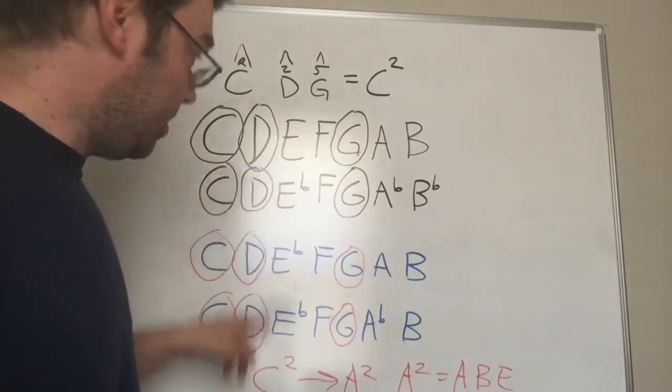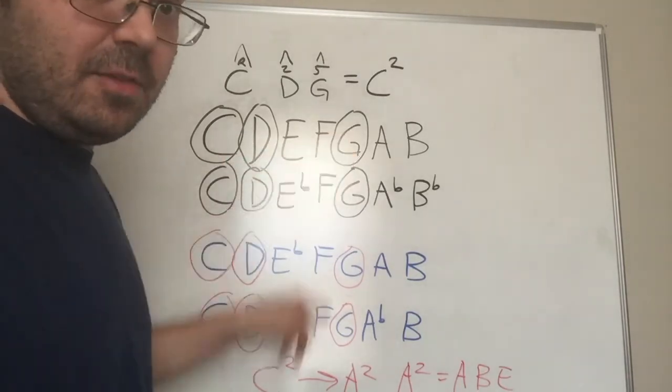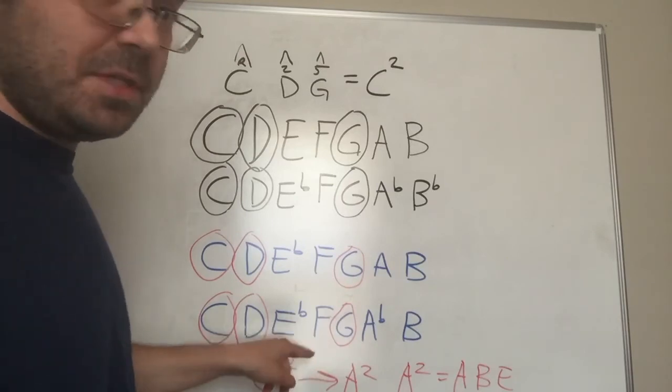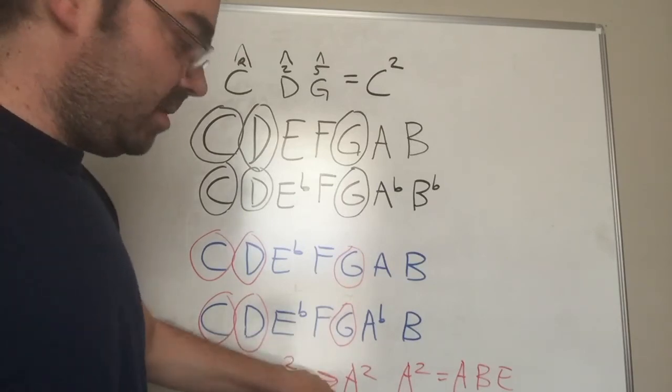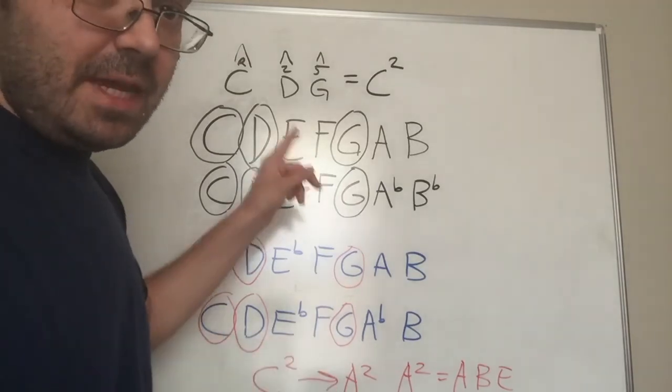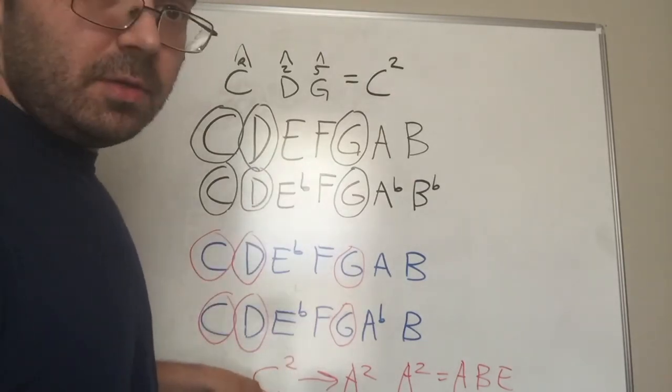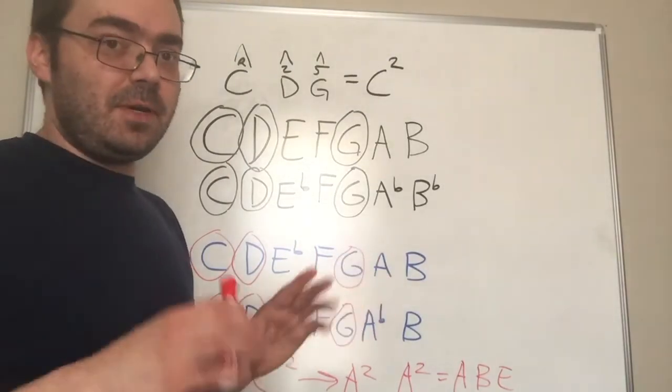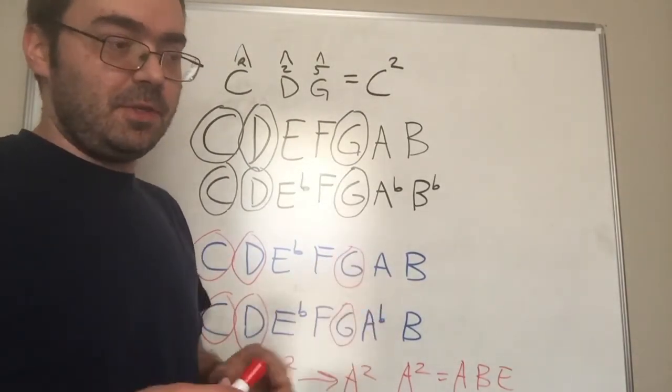Now you can use the C major scale over both C two and A two, but you can also combine over A two, you can use the C major, but over C two, you can use any of these four. So this is just going to open up a whole lot of different possibilities for you.